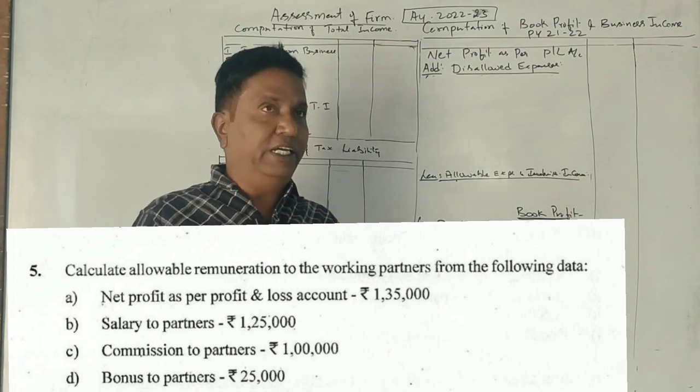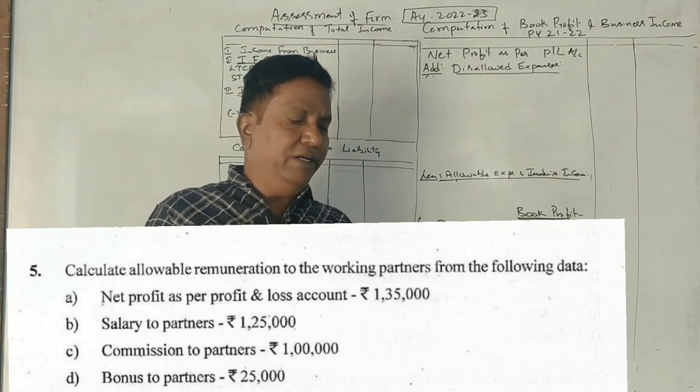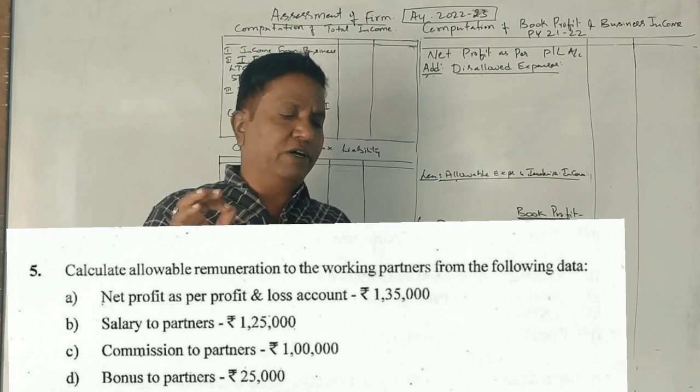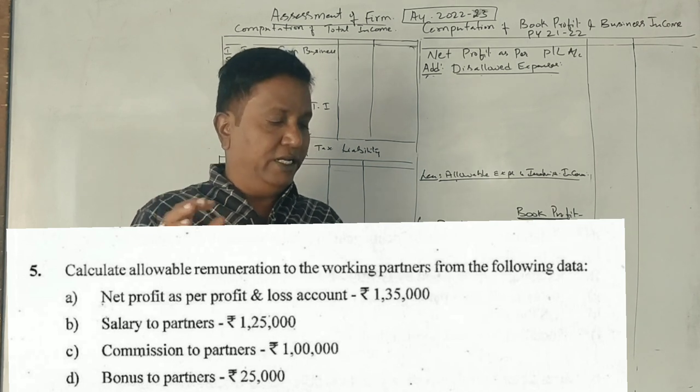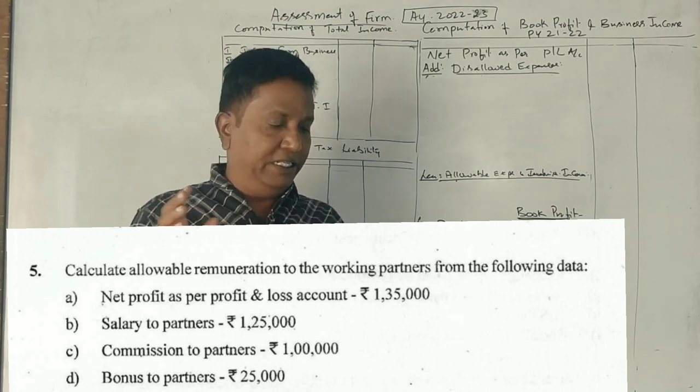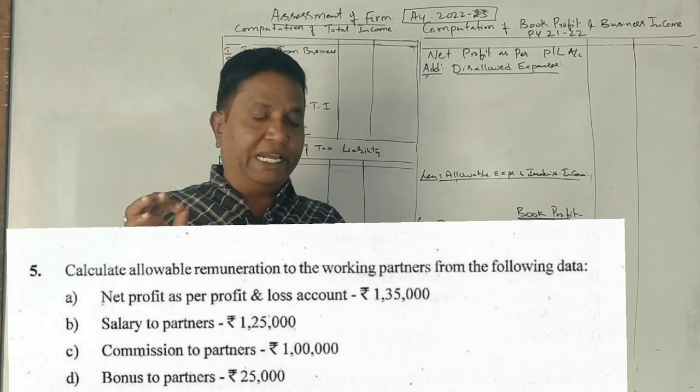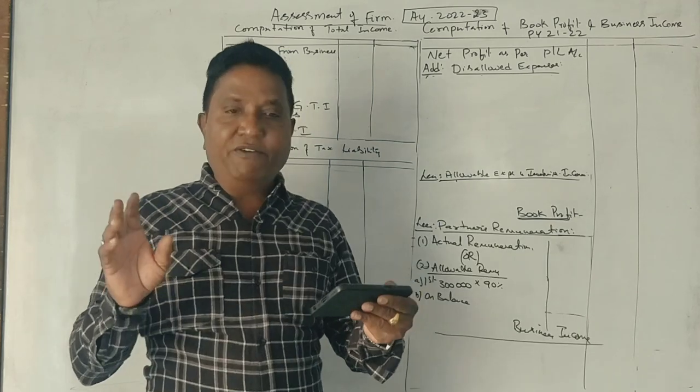University question paper: Calculate allowable remuneration to the working partners from the following data. Net profit as per profit and loss account Rs. 1,35,000. Salary to partners Rs. 1,25,000. Commission to partners Rs. 1,00,000. Bonus to partners Rs. 25,000.